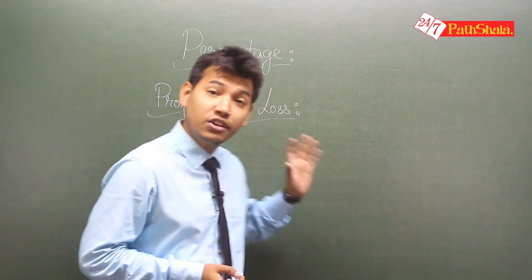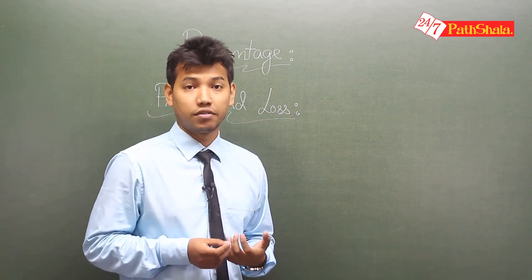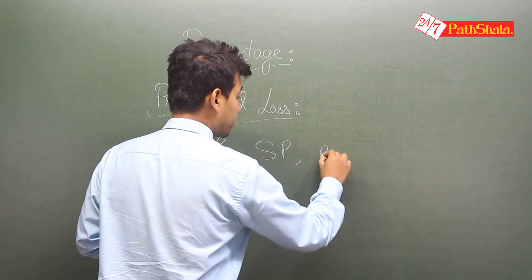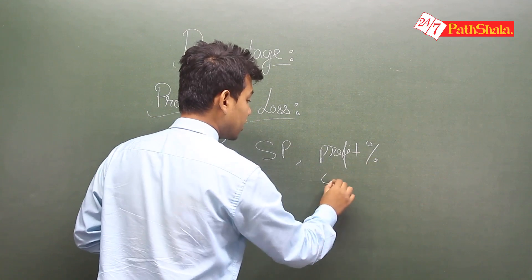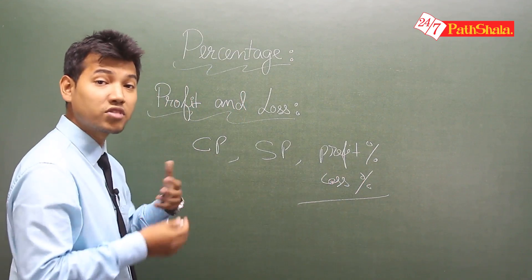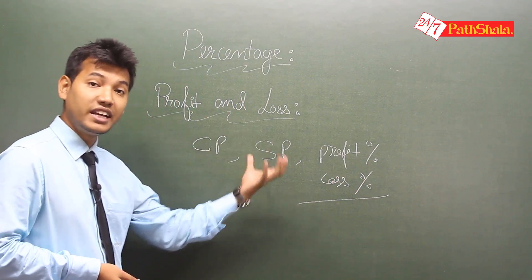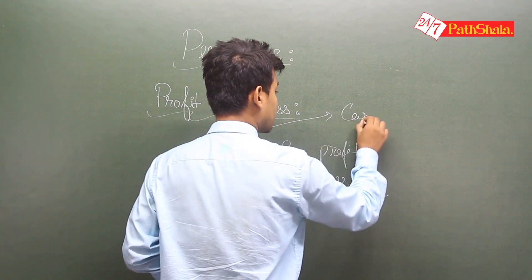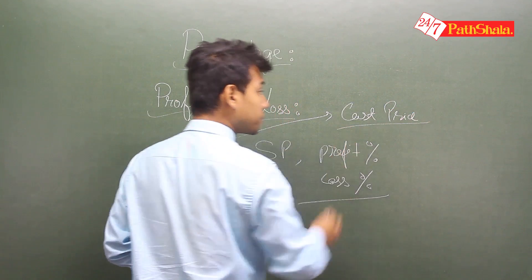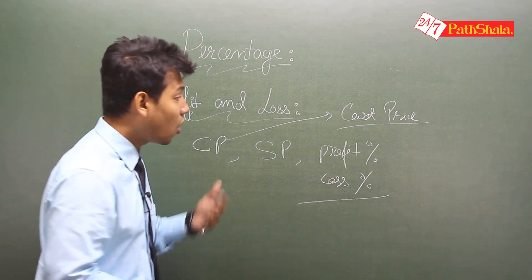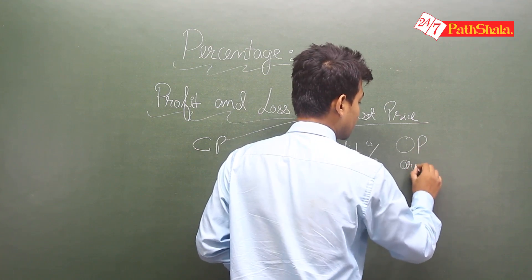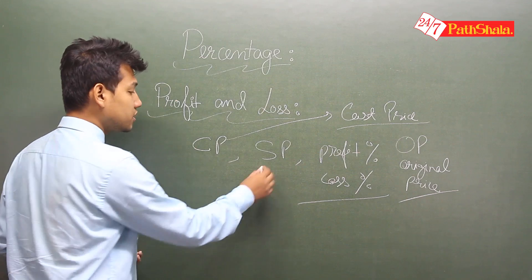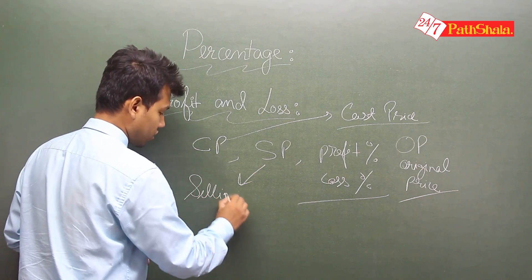Let's talk about profit and loss. There are some important terms you have to be aware of: CP (cost price), SP (selling price), profit percent, and loss percent. These are the key terms you will encounter when dealing with profit and loss. SP is your selling price, and CP is your cost price.